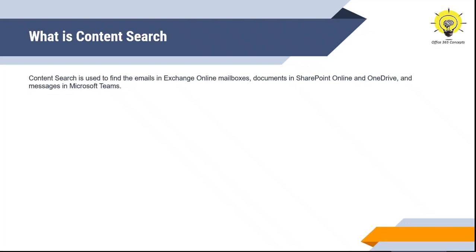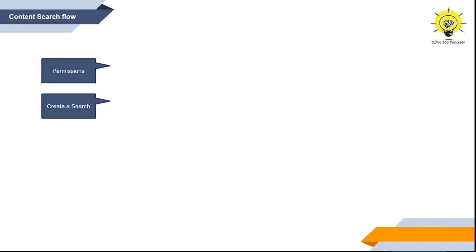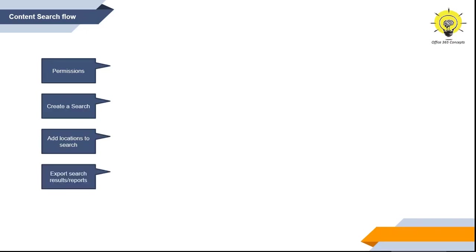By using the Content Search tool, you can perform searches on locations and download the results in a PST file. The administrator who is going to run a search query needs to be a member of the eDiscovery Manager role group. Once we have the required permissions, we create a search, add the locations we want to search, optionally apply conditions, and once the search is complete, we can export the results in a PST file.